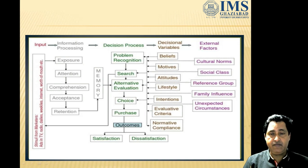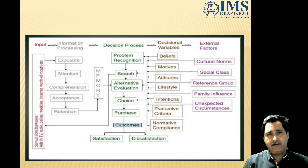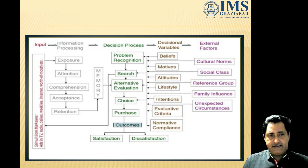This model is divided into five important parts: input, information processing, the decision process, decision variables, and external factors. Input basically refers to your internal and external stimuli. When we say stimuli, we talk about them in terms of marketer and non-marketer stimuli.